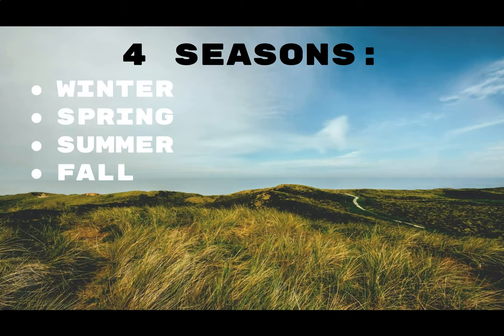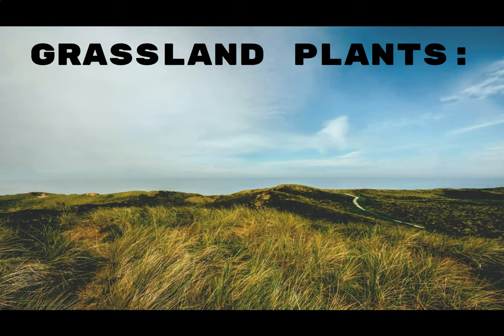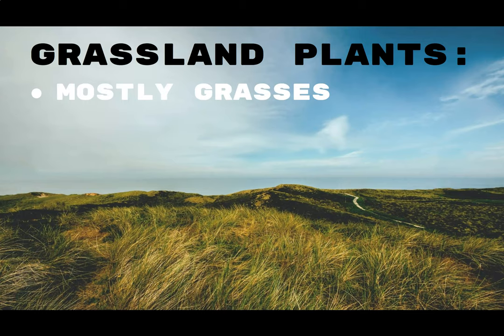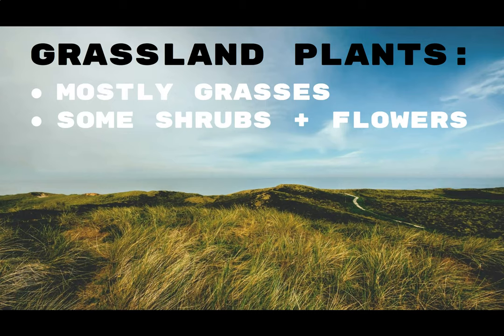That means a temperate grassland will be colder during the winter and warmer during the summertime. Plants in the grassland are mostly different types of grasses — many species but they all have these long blades. You also sometimes have shrubs, flowers, and small bushes, but very few trees. Mostly when you look at a grassland you'll see fields of low-lying plants close to the ground.